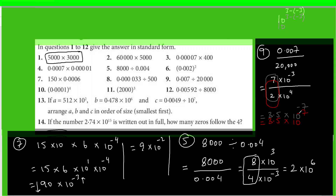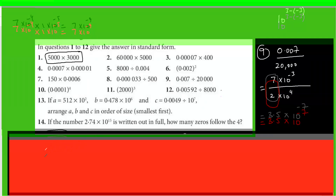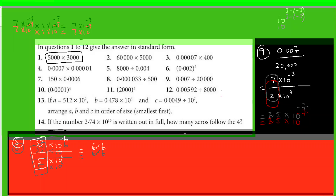Try all questions up to the twelfth. For question 8, I'll keep this as 33×10⁻⁶ divided by 5×10². When I divide 33 by 5 I get 6.6, so this is 6.6×10⁻⁸. That is the answer for the eighth question.